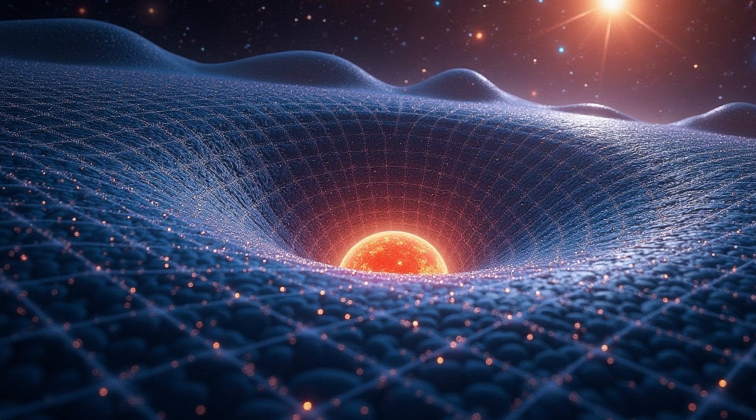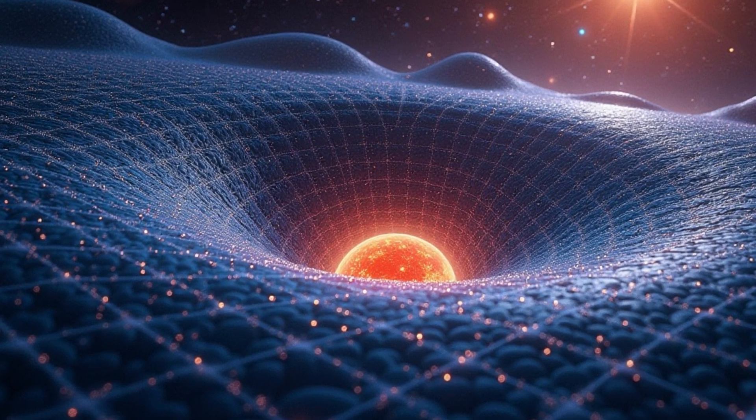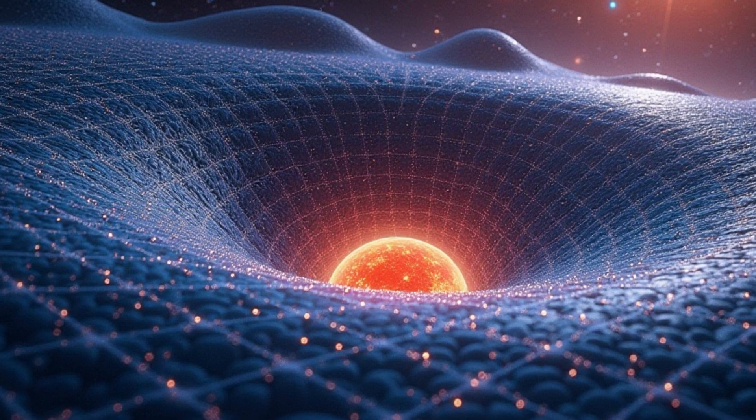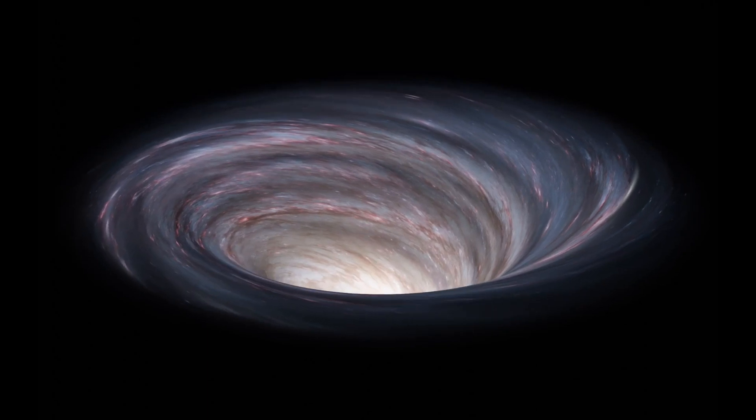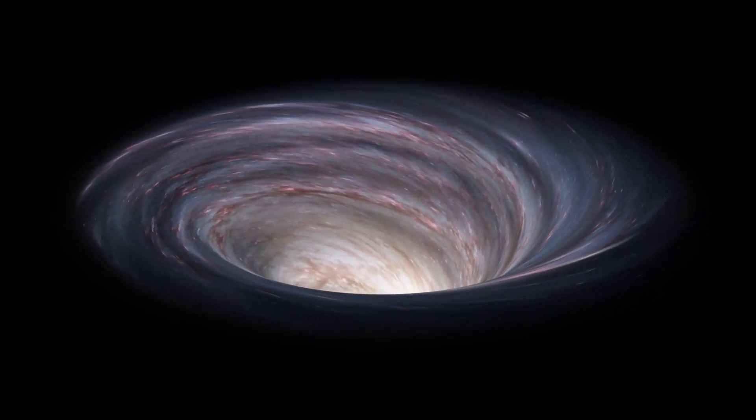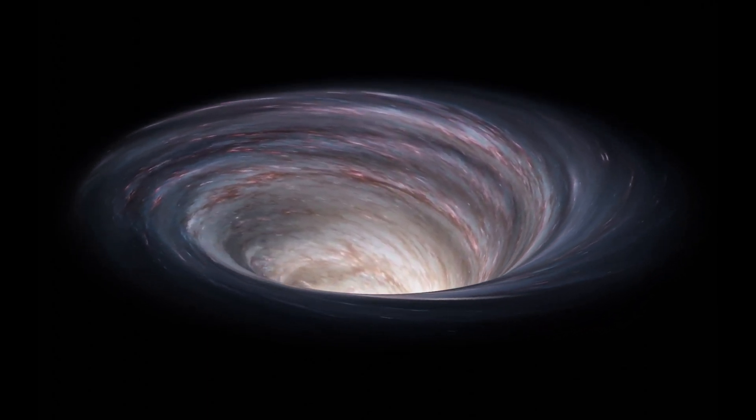But when a massive object like a star is placed on this fabric, it creates a deep curve or dent, much like the way the trampoline dips under the heavy ball. The dent in the fabric affects not just space but time as well.